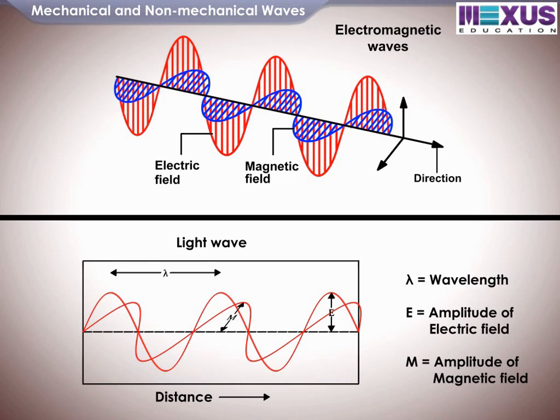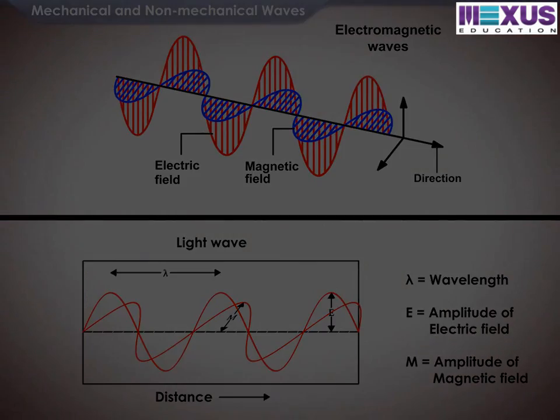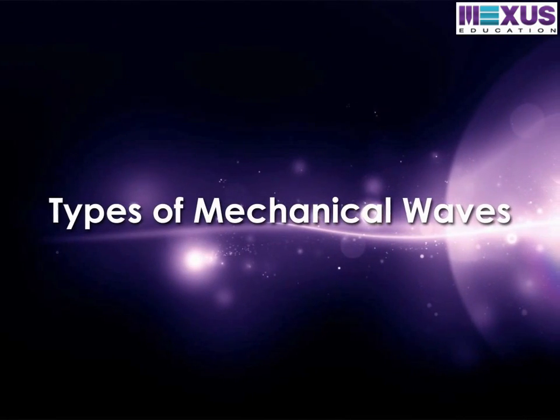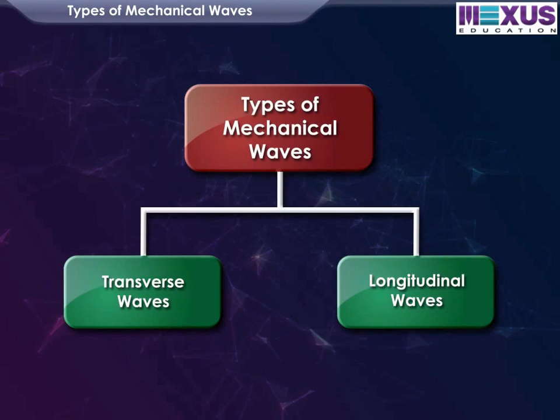Electromagnetic waves and light waves are examples of non-mechanical waves. Depending on the direction of wave propagation, mechanical waves are of two types.